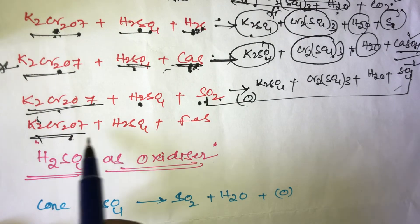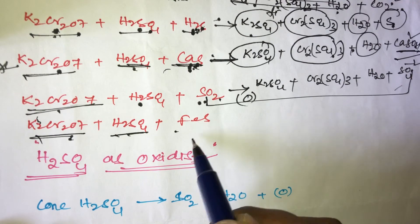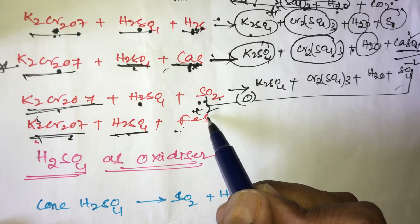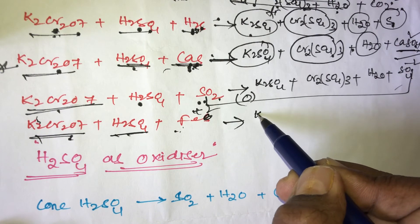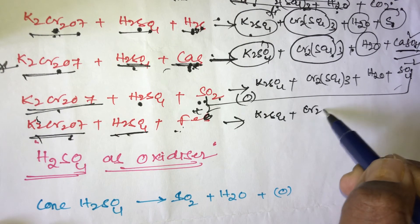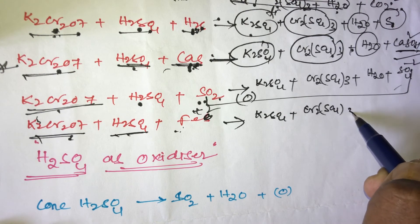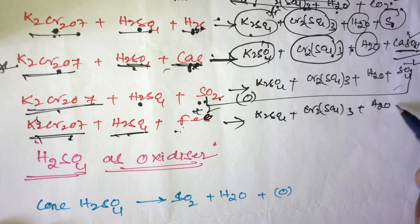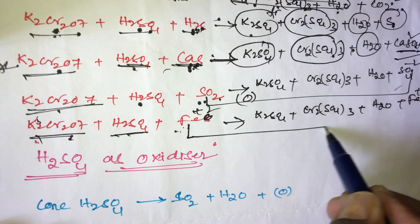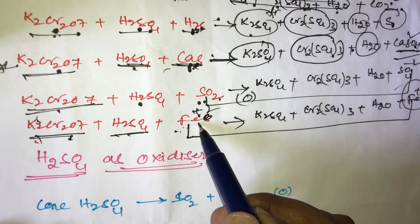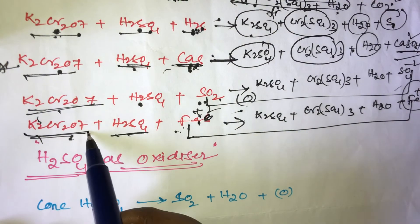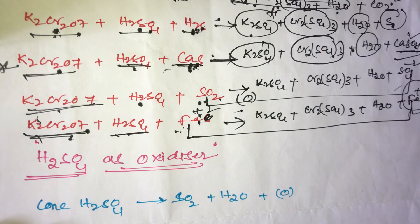Next: K2Cr2O7 plus H2SO4 plus Fe²⁺. The fixed products are K2SO4 plus Cr2(SO4)3 plus water, plus Fe³⁺. Fe²⁺ is converted into Fe³⁺ on oxidation with K2Cr2O7. These are the important oxidizing properties of potassium dichromate.